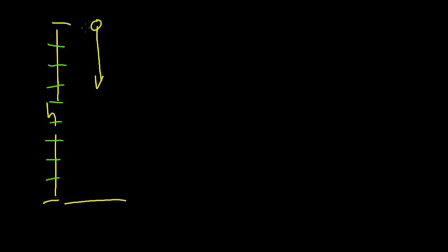We assume that within any given section the object is going at roughly a constant speed, and we look at the average speed of the object in that section. What I want to know is the time at each position: t equals zero at the top, then t1, t2, t3 at each slice. Since the object is going at various speeds, it will hit these points at different times, and at the end I should be able to make a position-time plot.